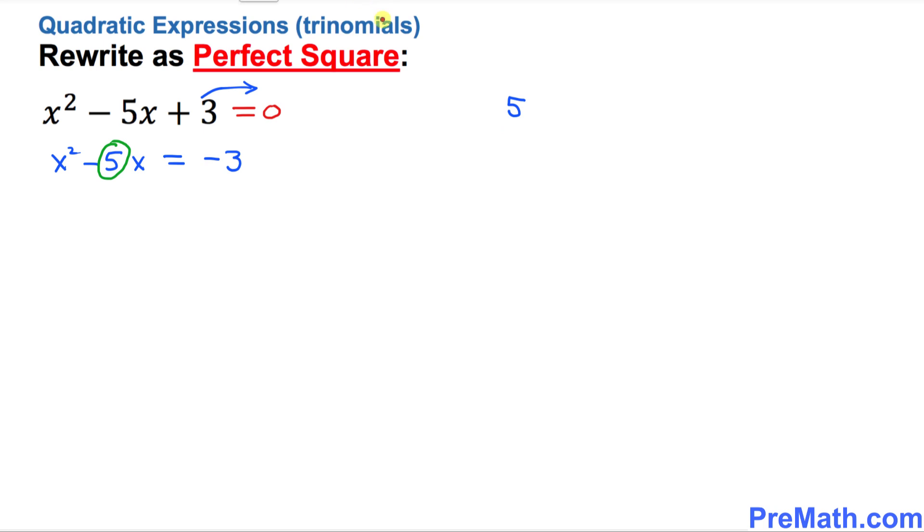I want you to divide whatever this number by 2, and then the next step is I want you to square it. So these are the steps. First, whatever this number divided by 2 and then square it.